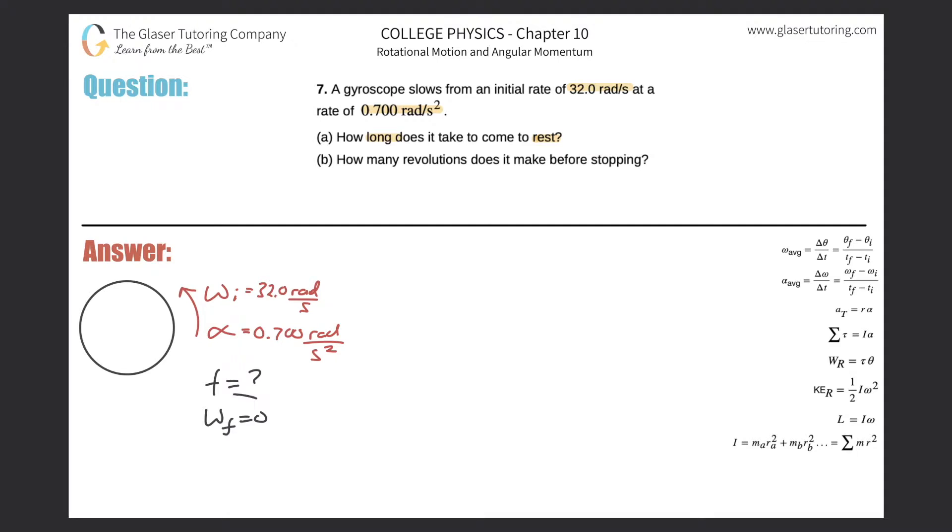We also know that the final angular velocity is zero because we want to find out how long it takes to come to rest. So it starts at 32 radians per second, it's going to decelerate at 0.7 radians per second squared, so there should be a little minus sign there. We want to find the time, and we also know that the final angular velocity is zero.